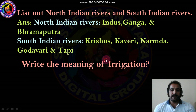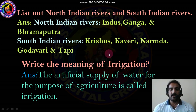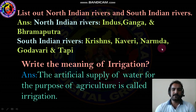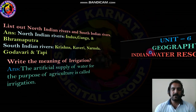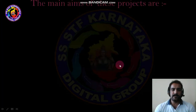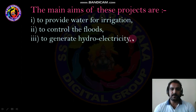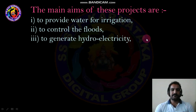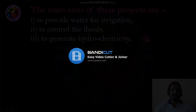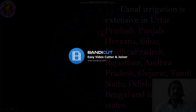The meaning of irrigation: the artificial supply of water for the purpose of agriculture is called irrigation. I hope you understand this video. In the next video, we will discuss Indian water resources, including the main names of the multi-purpose river valley projects.